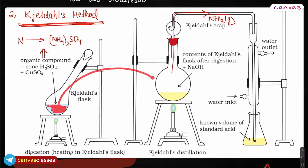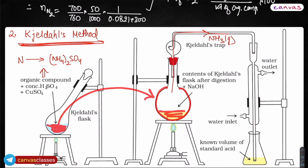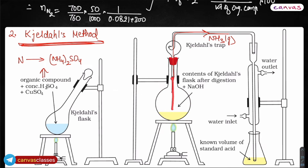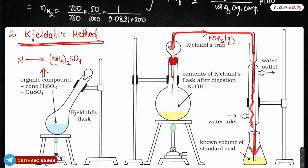After digestion, all the contents of the flask are transferred to a round-bottom flask where distillation is carried out. We heat it with sodium hydroxide. Since ammonium sulfate is already present, heating with NaOH will generate ammonia gas. The ammonia gas goes out through a condenser, which is a coolant system, and the hot ammonia gas is cooled down to form liquid ammonia that drips down.